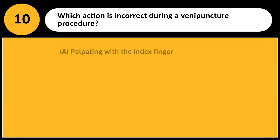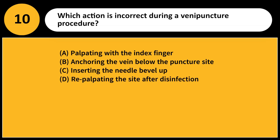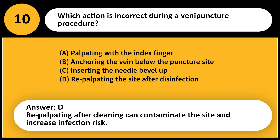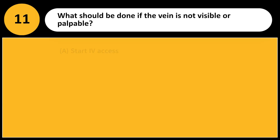Which action is incorrect during a venipuncture procedure? A. Palpating with the index finger. B. Anchoring the vein below the puncture site. C. Inserting the needle bevel up. D. Repalpating the site after disinfection. Answer: D. Repalpating after cleaning can contaminate the site and increase infection risk.